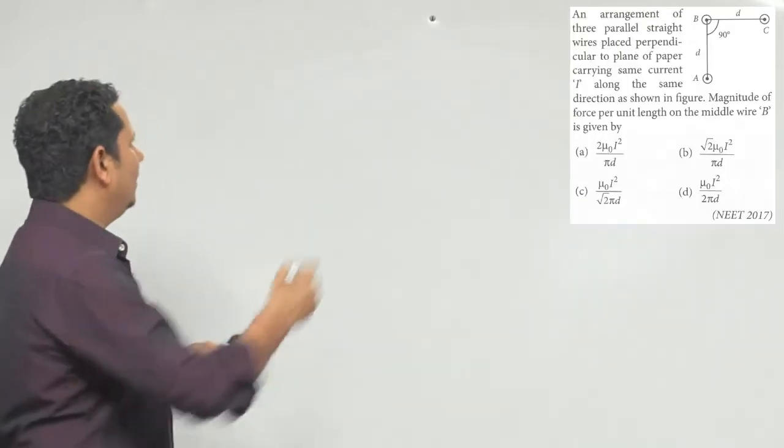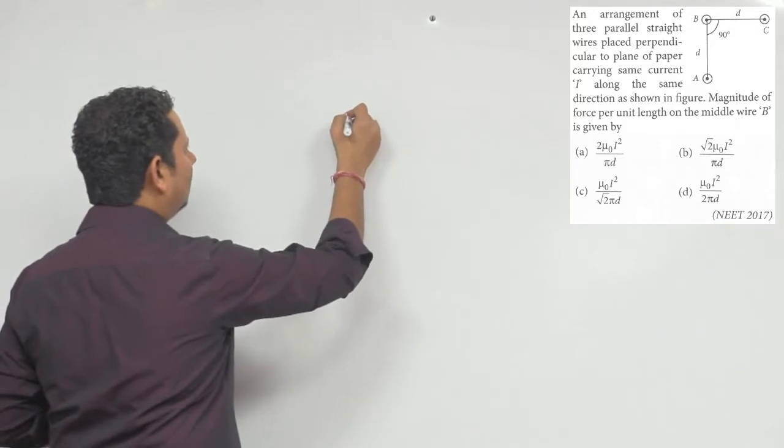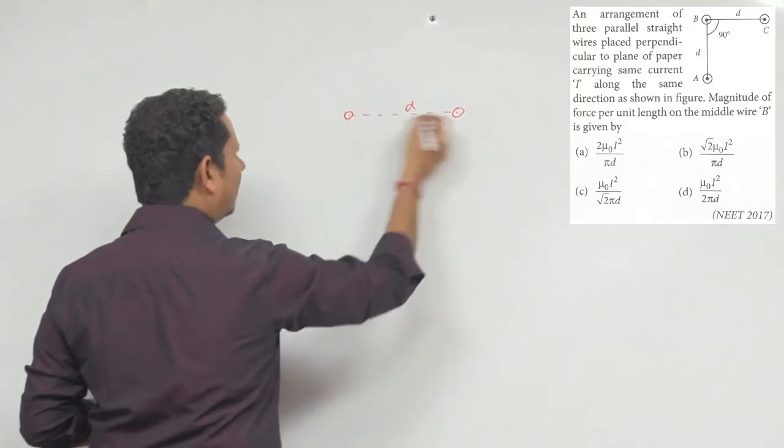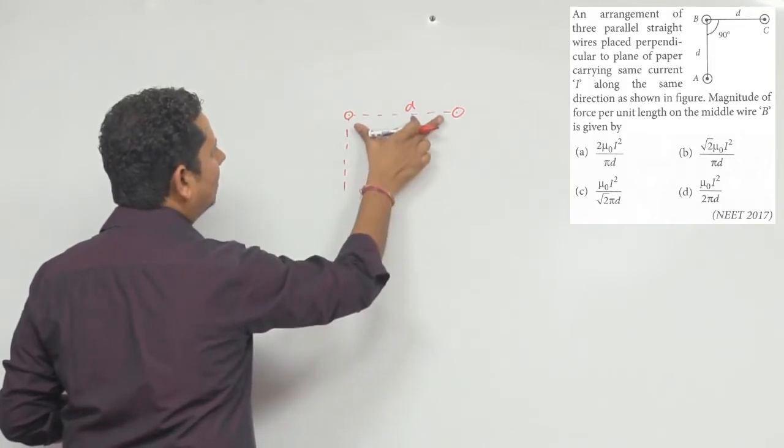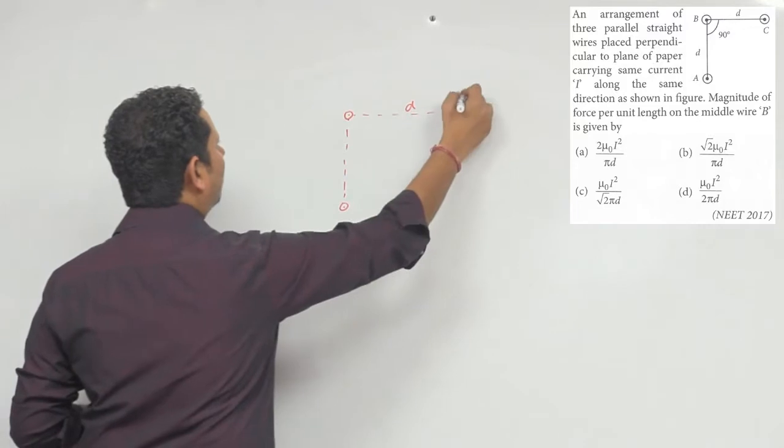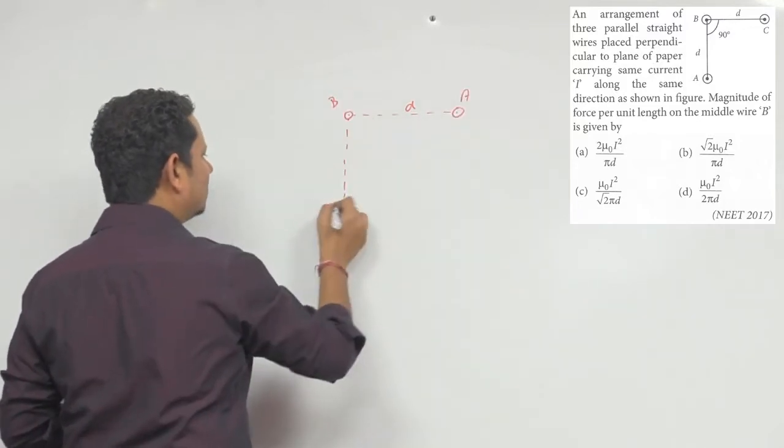Sawal simple is. Scenario is that this one is current carrying wire and here the distance from the same current carrying wire. This one is A, this one is B, this one is C.